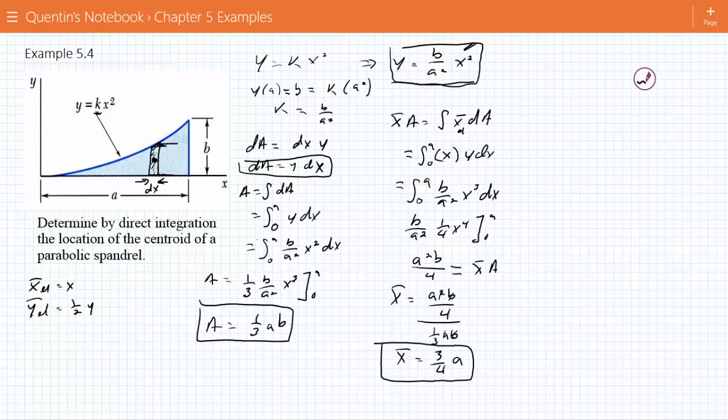So our x bar is 3 fourths, so it's going to be somewhere along this line. So I just happened to draw it right on the x bar.